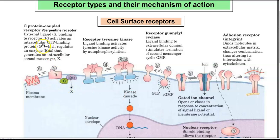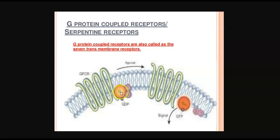The first one is referred to as a G-protein coupled receptor, or serpentine receptor. Looking at the image of a G-protein coupled receptor, this is the reason they are called a serpentine receptor — it is looking like a serpent, which is snake-like.